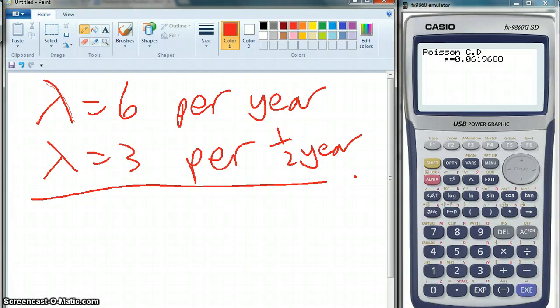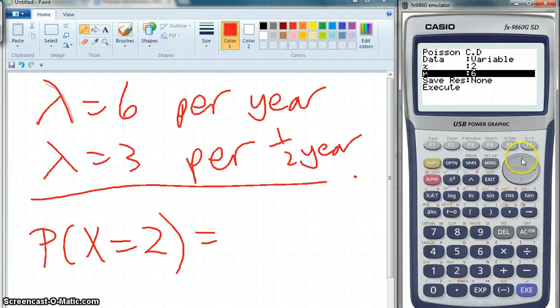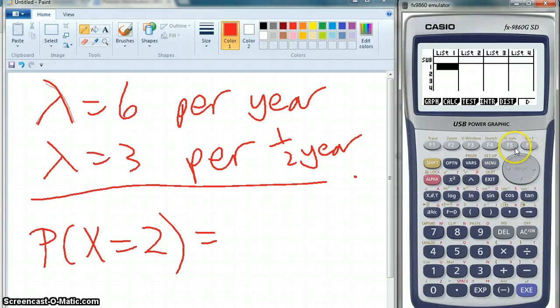So, the last question is two shark attacks in six months. So, the probability that it equals two shark attacks, we need to go to the equals one, the PPD.